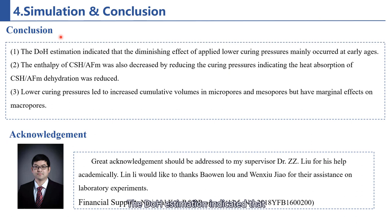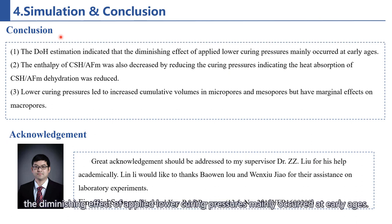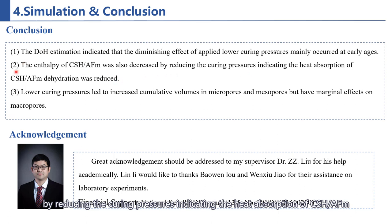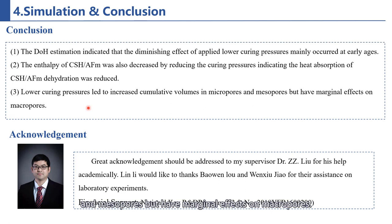The last is the conclusion. The degree of hydration estimation indicated that the diminishing effect of applied lower curing pressures mainly occurred at early age. The content of calcium silicate hydrate and monosulfate hydrate calcium sulfoaluminate was also decreased by reducing the curing pressures, indicating that the heat absorption of calcium silicate hydrate and monosulfate hydrate calcium sulfoaluminate dehydration was reduced. Lower curing pressures led to increased cumulative volumes in micropores and mesopores but have marginal effects on macropores.